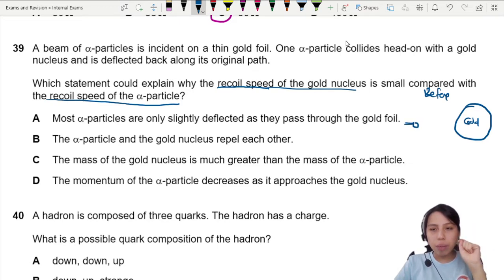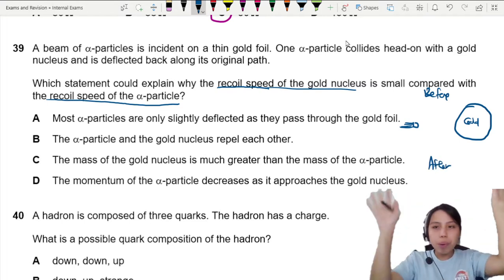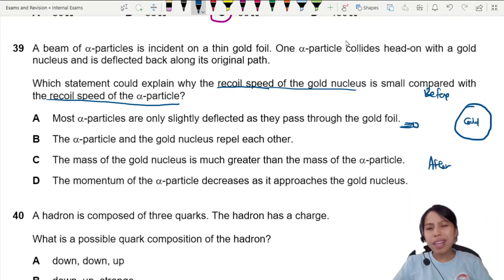Then a tiny little alpha particle comes in and tries to bomb this fellow. So after collision, let's say that they recoil in opposite directions, the small alpha flies there, the big gold nucleus flies the other way.